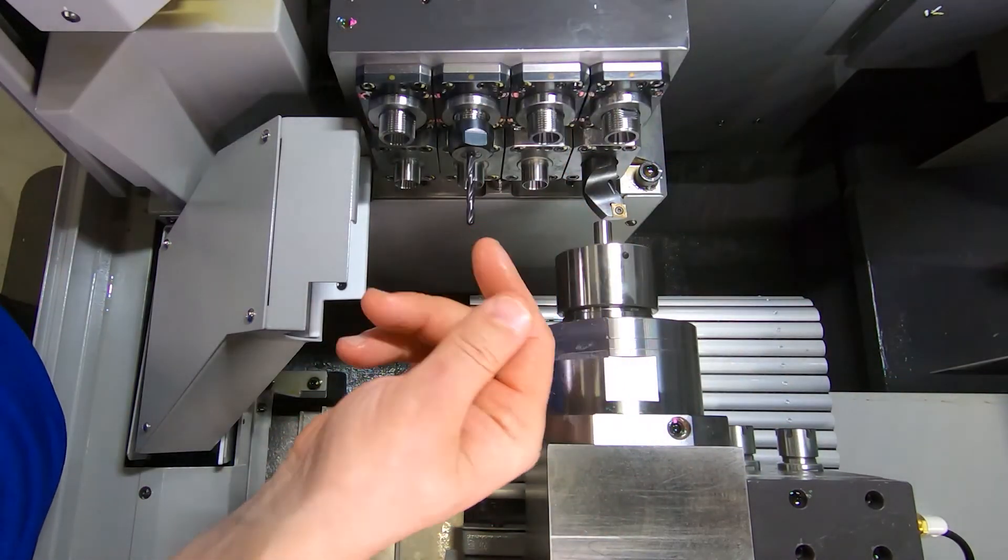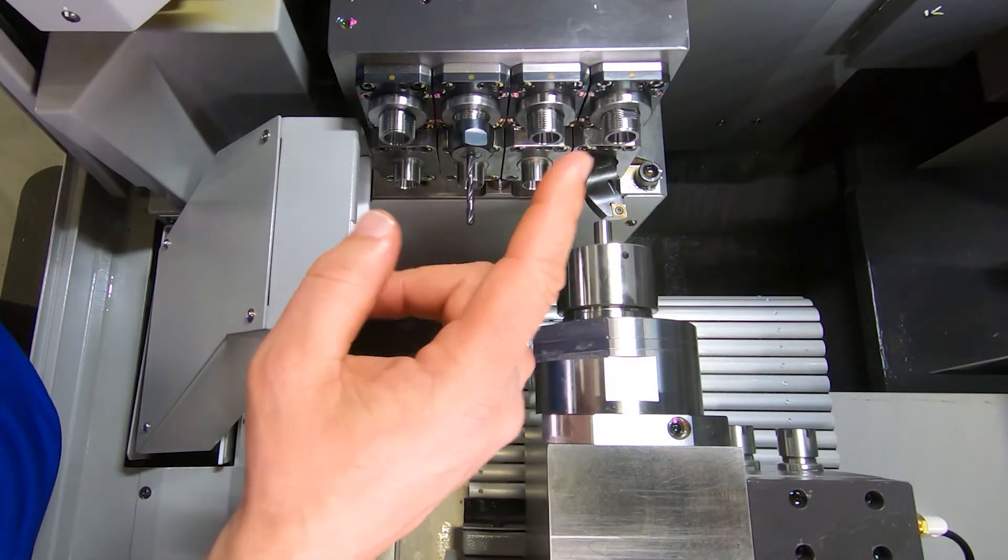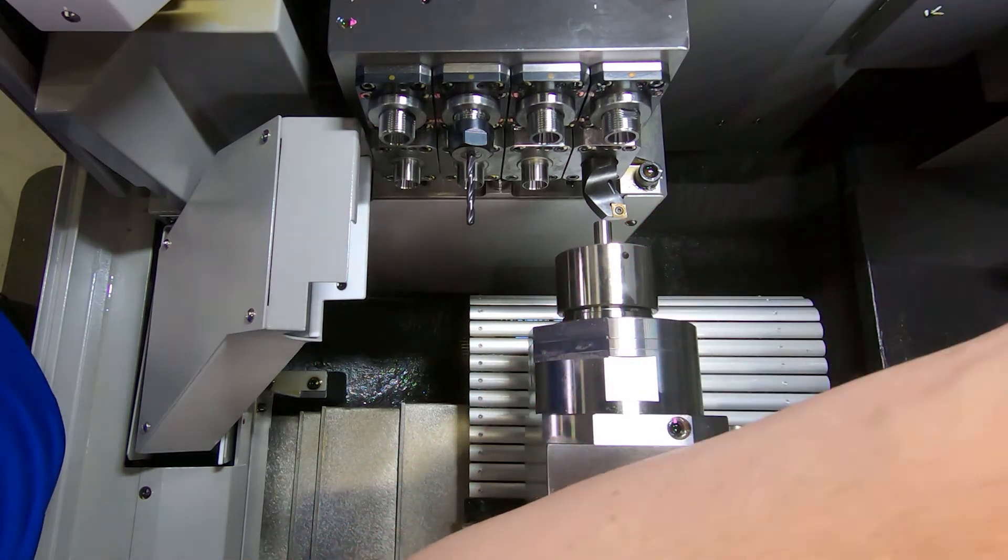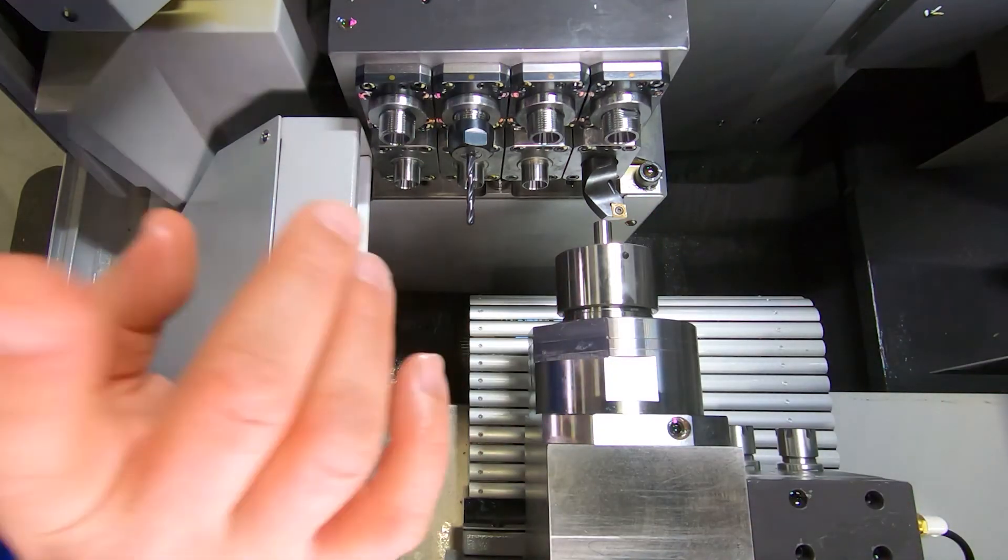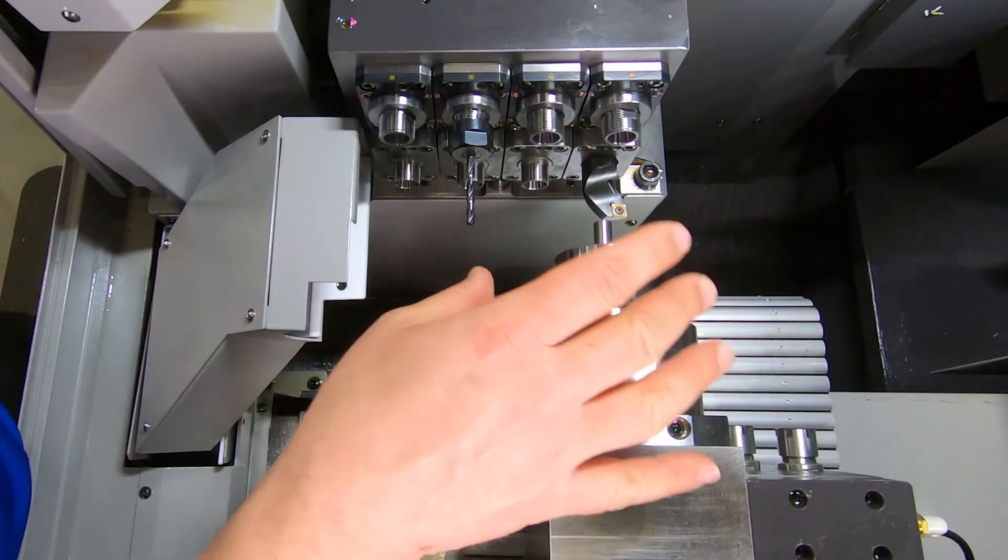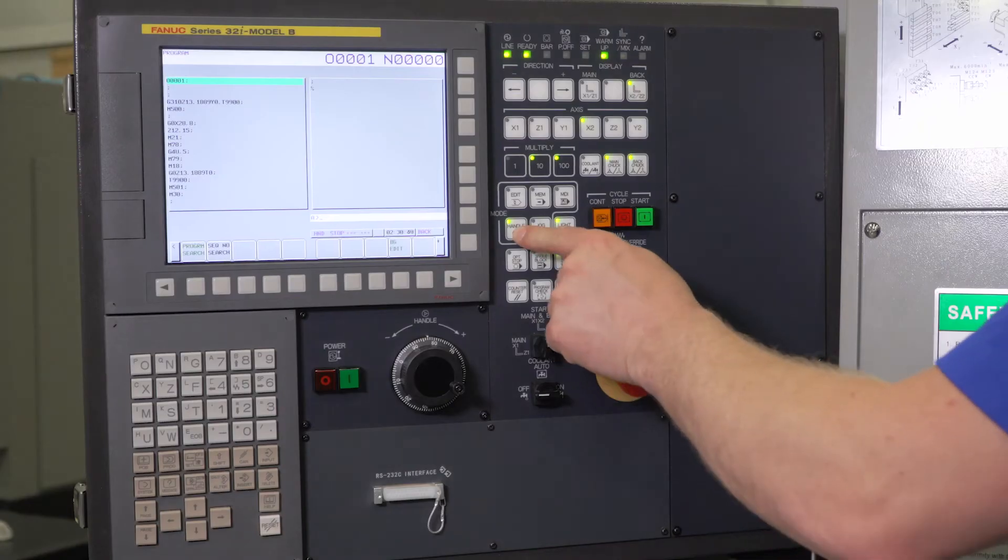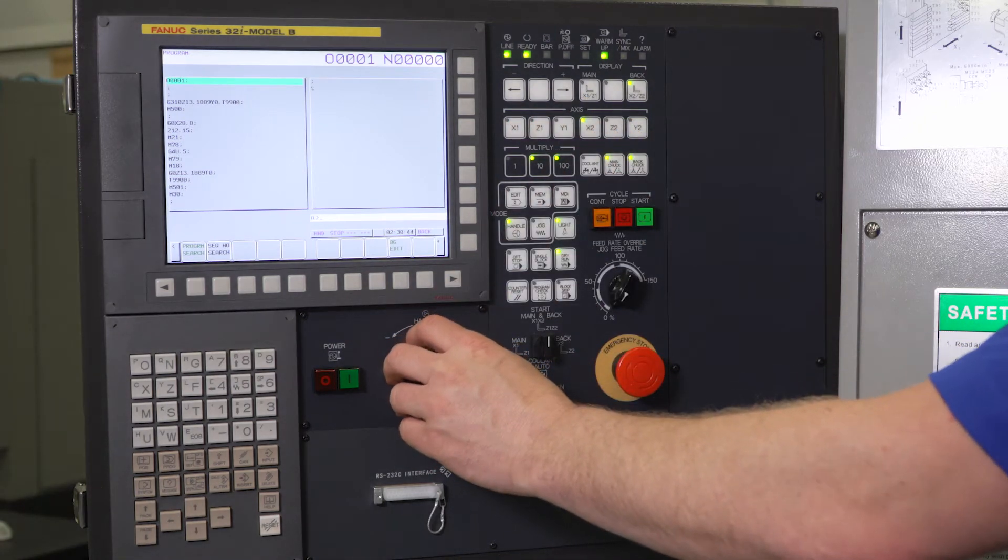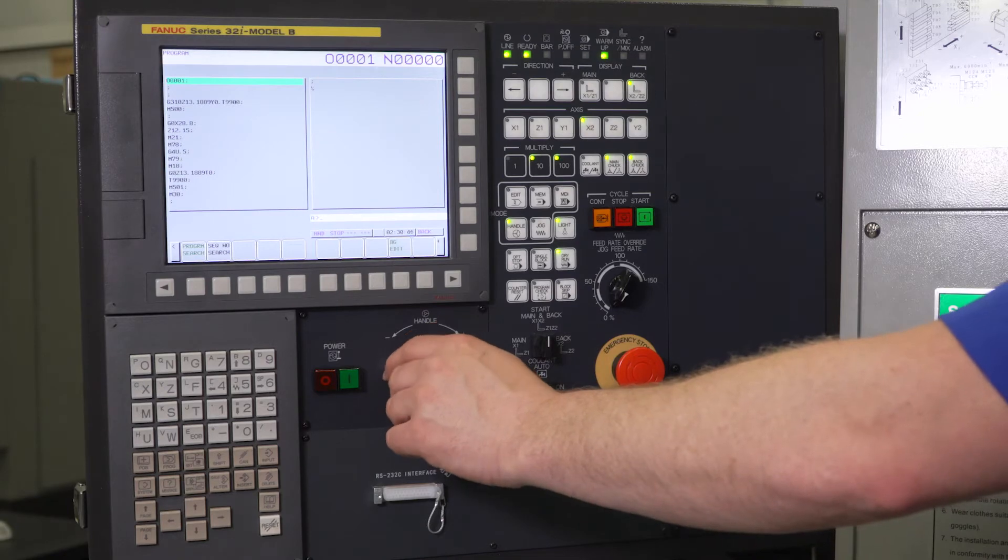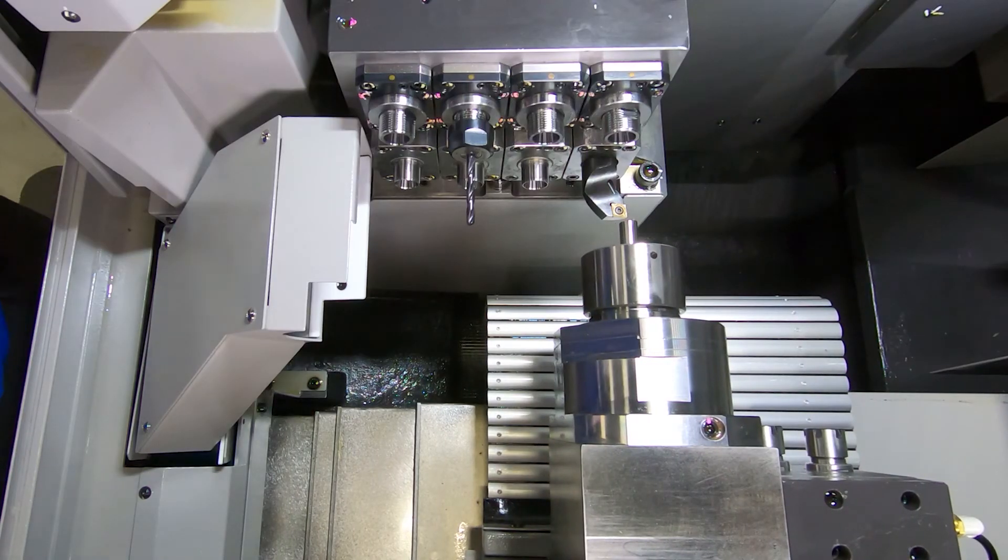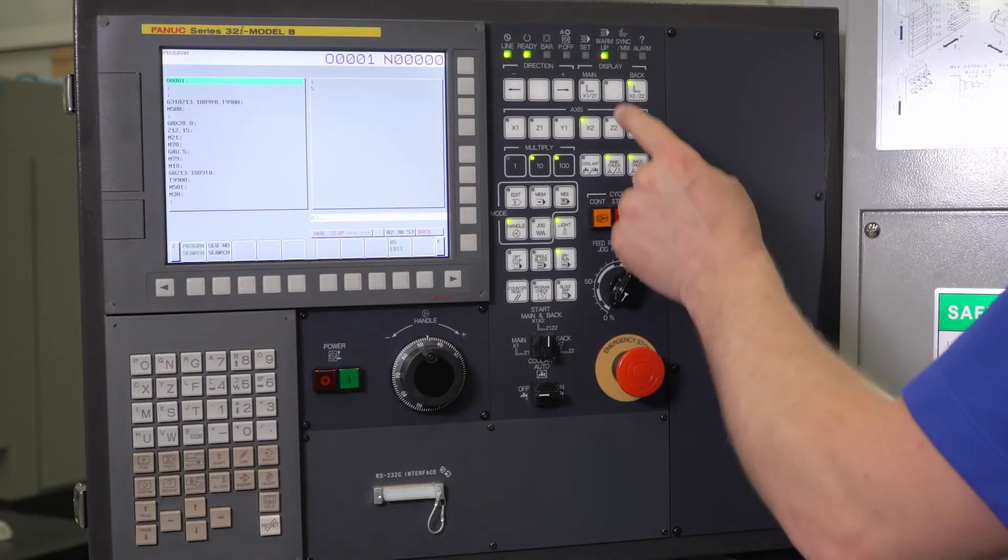On say an SS26 machine where the back working block is in the back of the machine, X2 positive is the other direction. It's going to go away from me. So always keep that in mind when you're touching off the X axis on the sub spindle side. So I'm going to move my X2 in the negative direction. I'm going back towards home position until I get my part in front of the tip of my tool.